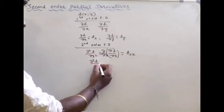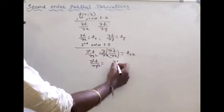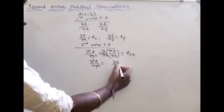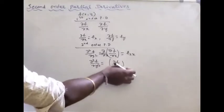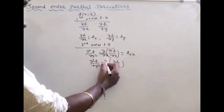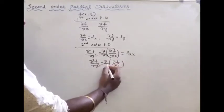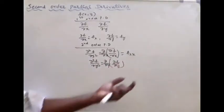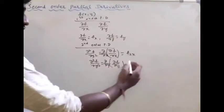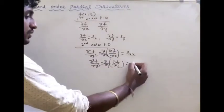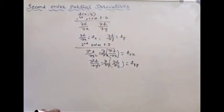Similarly, dou square f by dou y square. First take dou f by dou y — first with respect to y, partial derivative — then again with respect to y, partial derivative. This is the same concept for the y direction.